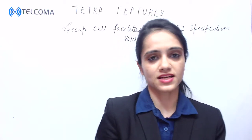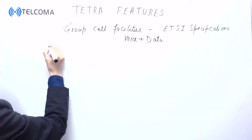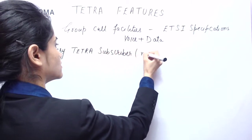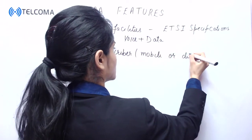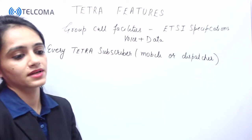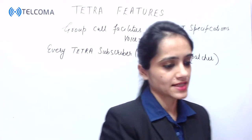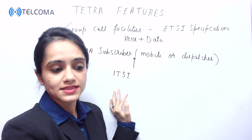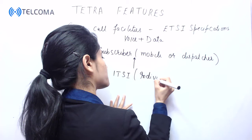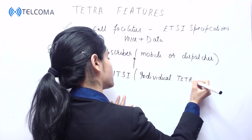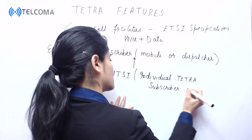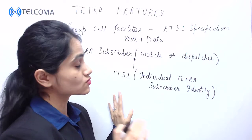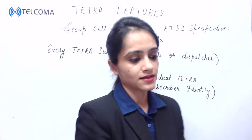Every TETRA subscriber, whether mobile or dispatcher, is defined by an ITSI, where ITSI stands for Individual TETRA Subscriber Identity. That means every mobile or every dispatcher has its own ITSI.